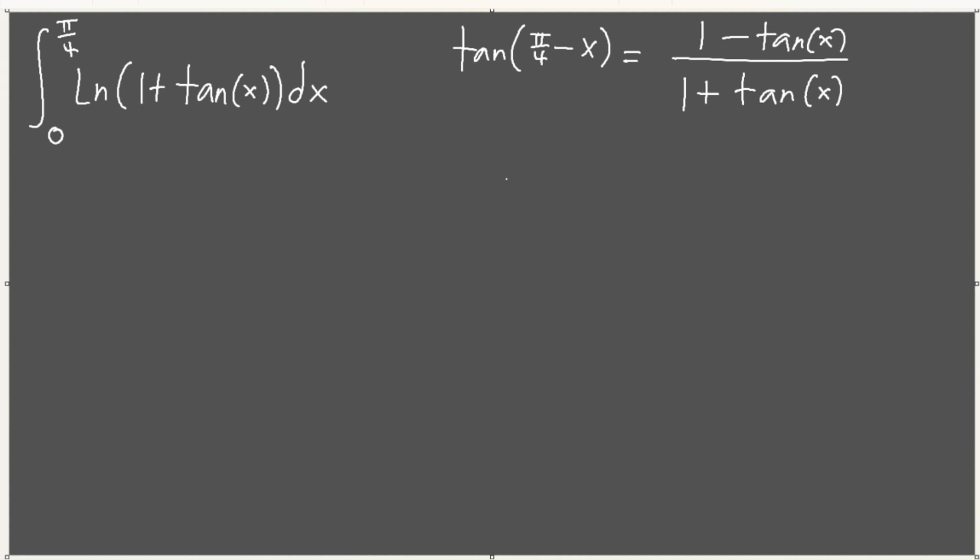So this is what tangent of pi over 4 minus x looks like. Alright, interesting. But we have 1 plus tangent of x. So for 1 plus tangent of pi over 4 minus x, we have 1 plus this. 1 minus tangent of x, and this is going to equal to 1 plus 1 plus tangent of x plus 1 minus. This will give us 2 over 1 plus tangent of x, because the tangent x and the minus tangent x is going to cancel out.